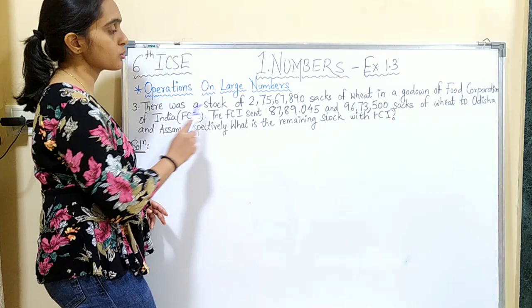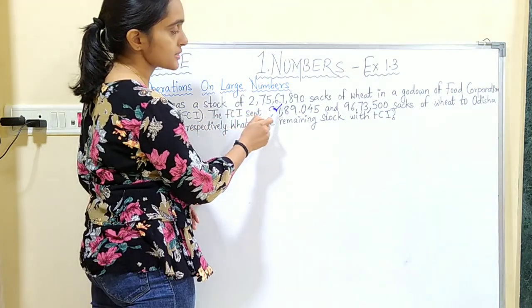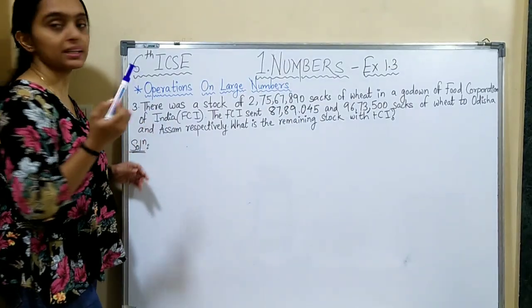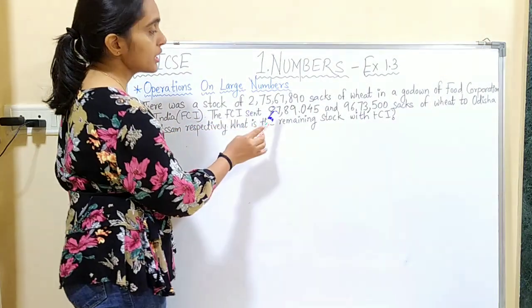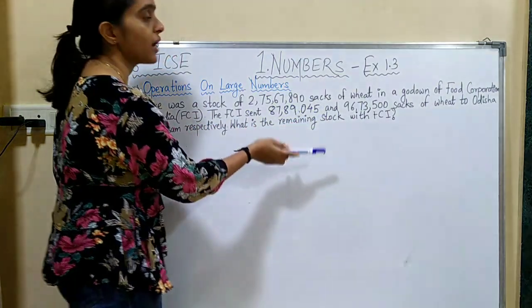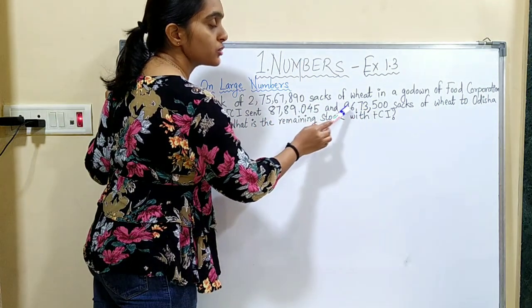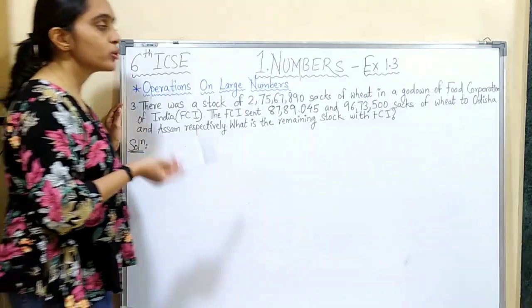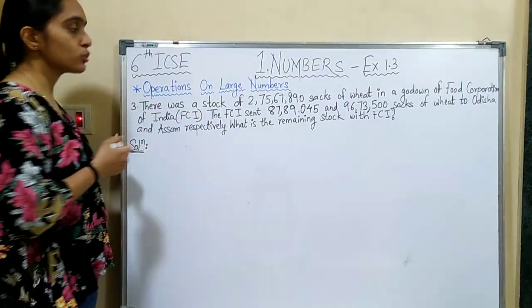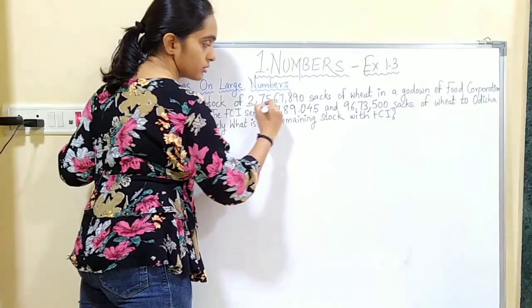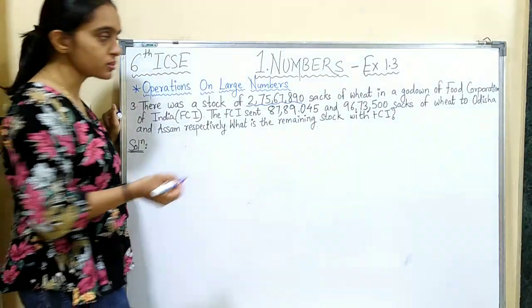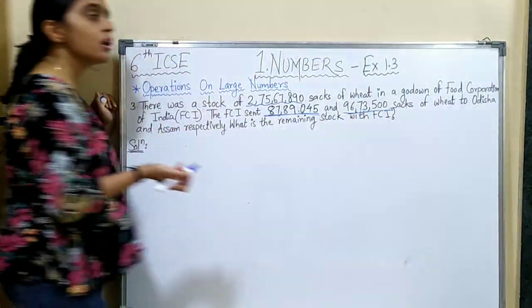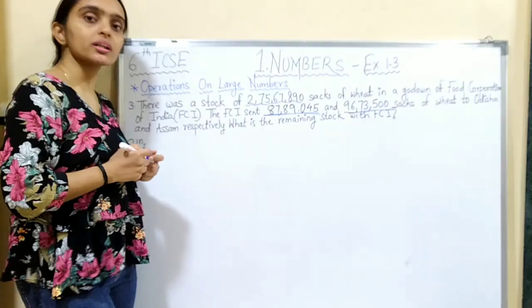The next question says: there was a stock of 2,75,67,890 sacks of rice in a godown of the Food Corporation of India (FCI). The FCI sent 87,89,045 sacks to Odisha and 96,73,500 sacks to Assam respectively. What is the remaining stock left with FCI?